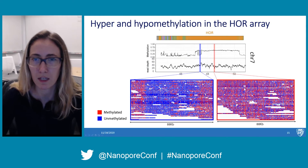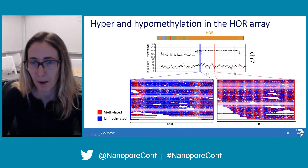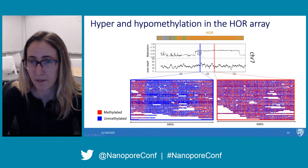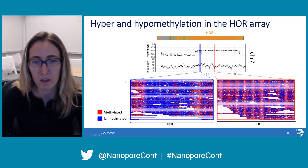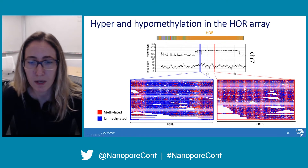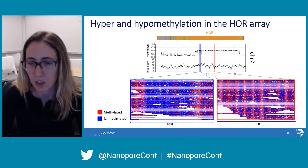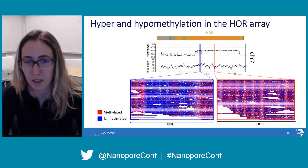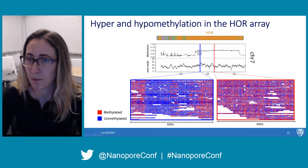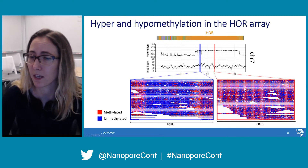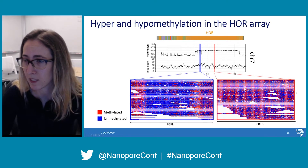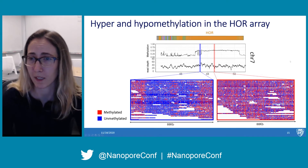Looking at the higher order repeat array of chromosome 7 in detail, we see hypermethylation and a region of hypomethylation. When we look at individual reads — each representing an individual cell, with red dots for methylated and blue dots for unmethylated sites — this hypomethylation occurs across every read, meaning there is no allele-specific methylation event and no smaller populations of methylated or unmethylated cells. It's largely consistent across the entire cell population, as is the hypermethylation of the higher order repeat.